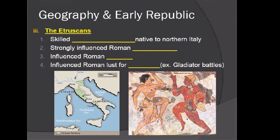The third group was the Etruscans, who were skilled metal workers native to northern Italy. They had a very strong influence on Roman civilization, and much of what they did was absorbed into Rome as it evolved. They also influenced the Roman arch — the round entryway that allowed buildings to use arches instead of solid walls, saving materials and time while remaining structurally strong. Additionally, the Etruscans influenced Rome's fascination with killing; the Etruscans were very much into death, dying, and battles.